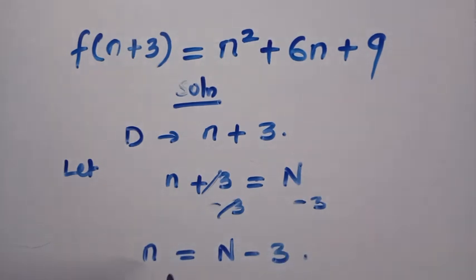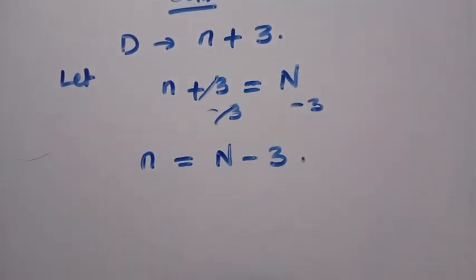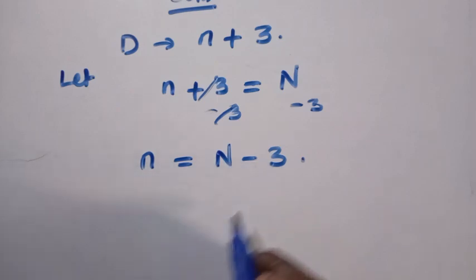Note that we can choose any letter of our choice. So I just choose N to be the representative of n+3. So on getting this, let's look at the left hand side. We have n², small letter n squared.